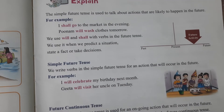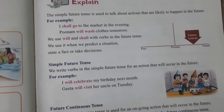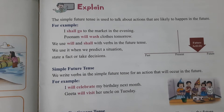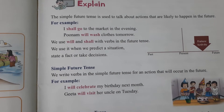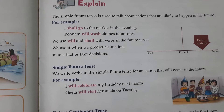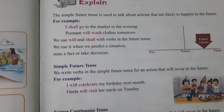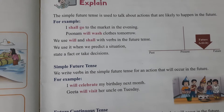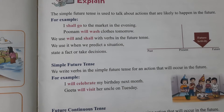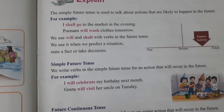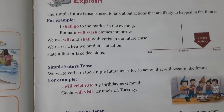I will go to the market in the evening. I will wash clothes tomorrow. We will wash clothes tomorrow. We use 'will' and 'shall' with verbs in the future tense.